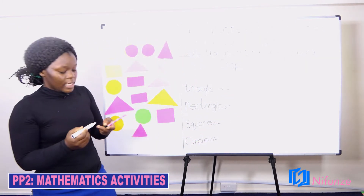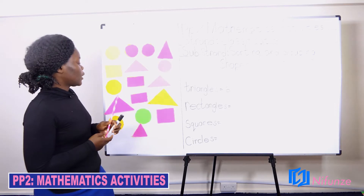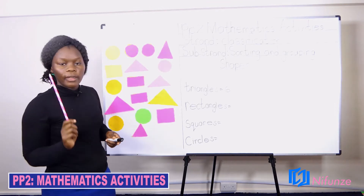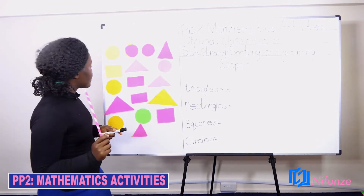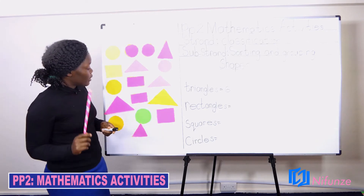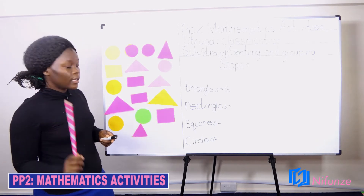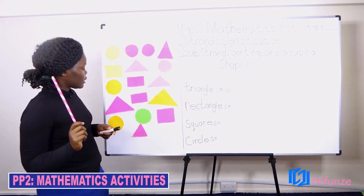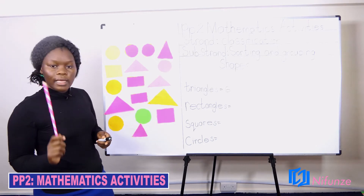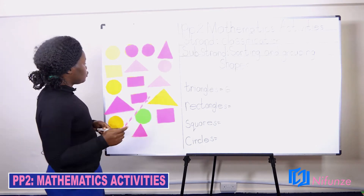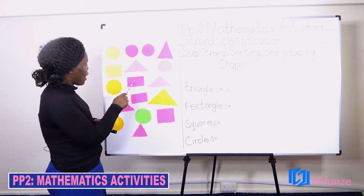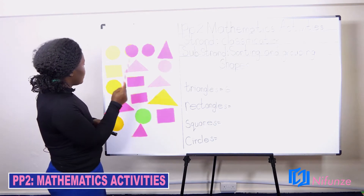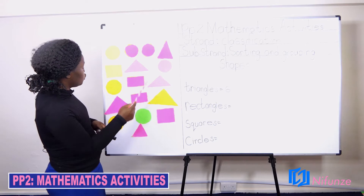We are going to do the same for the rectangles. Where are the rectangles? Where are the rectangles? Here they are. Here they are. Can you see the rectangles? Can you see the rectangles? Yes, yes, yes. Let's count together. One, two, three.